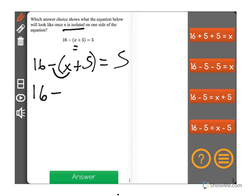So it's 16 minus x, and although it says plus 5 there, we have to put the negative sign there, so it's minus 5 equals 5.